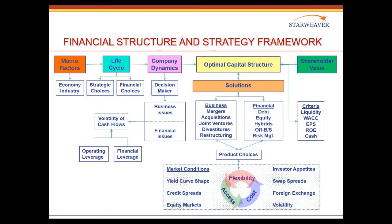The fundamentals of the course are distilled into one slide, and then we explode the slide into discussions on each of these major components. This is what we call the financial structure and strategy framework. If you look in the upper left corner where it says macro factors, you'll see this is a way in which we help the relationship manager think about what are the overall industry and economy factors that affect their client.